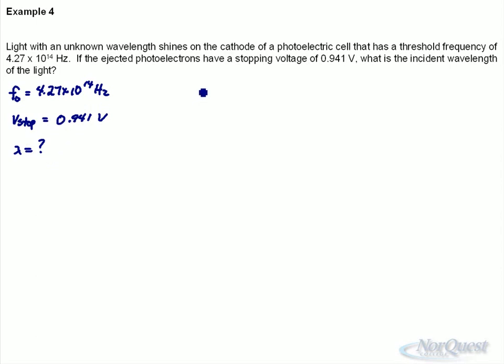Okay, so again, start with the formula. Ek max equals the energy of the incoming light minus W. Since we're given the energy of the electrons in terms of stopping voltage, we will write this as qₑV_stop.